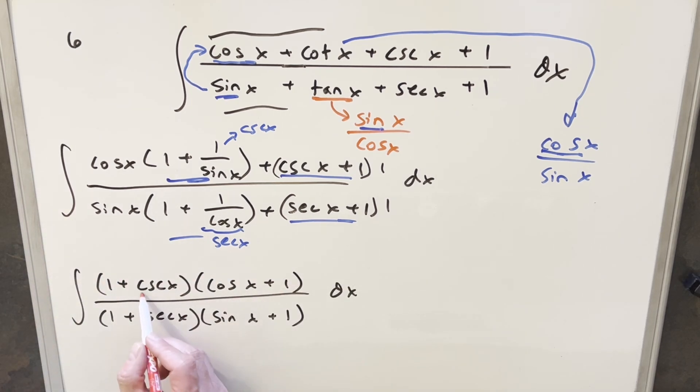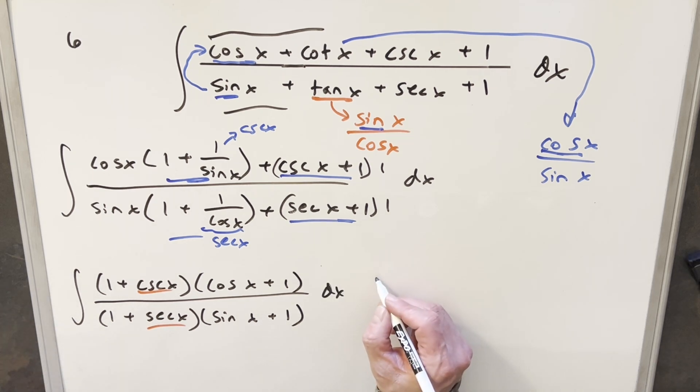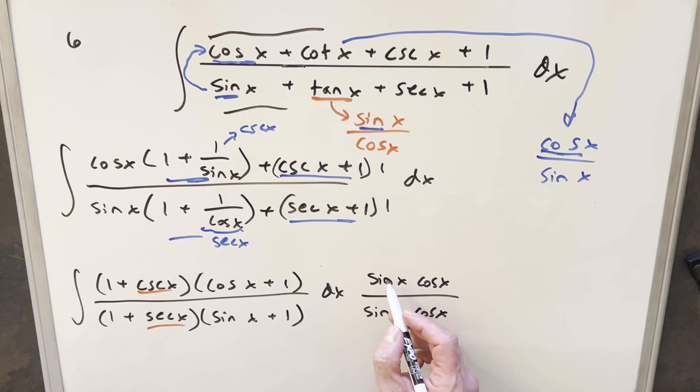But now I want to deal with this. I don't really want this cosecant and secant here. I want everything in terms of sines and cosines. And so what I want to do to try to clean this up is I'm going to multiply sine x cosine x over sine x cosine x. So I'm just multiplying by 1.